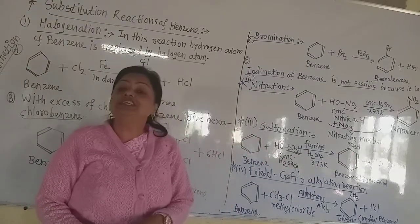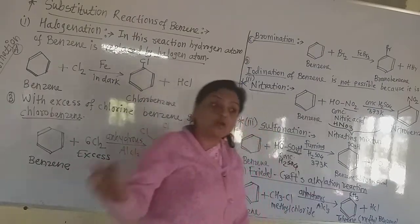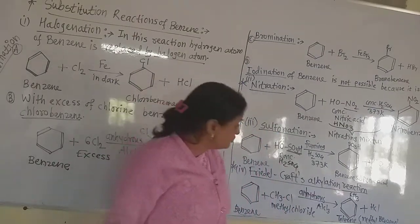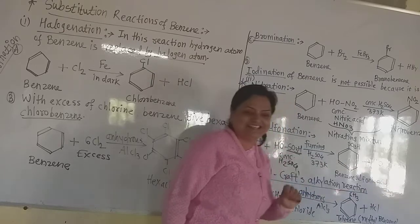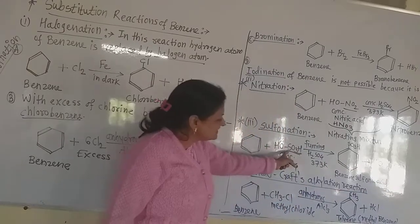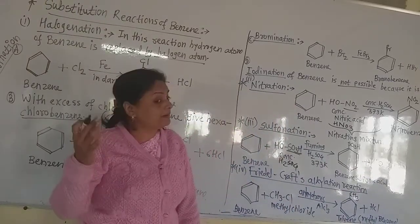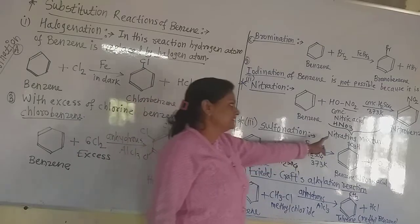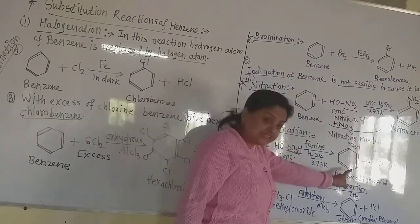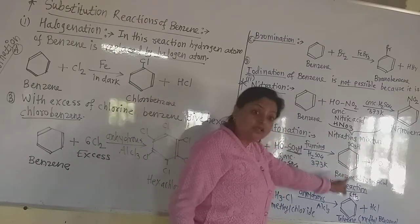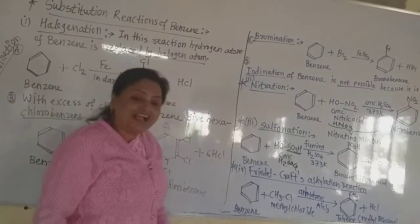The compound obtained after sulfonation of benzene is called benzene sulfonic acid, because the sulfonic acid group SO3H is introduced. Remember that the product of nitration is nitrobenzene, and the product of sulfonation is benzene sulfonic acid.